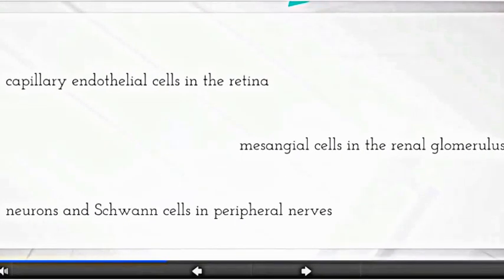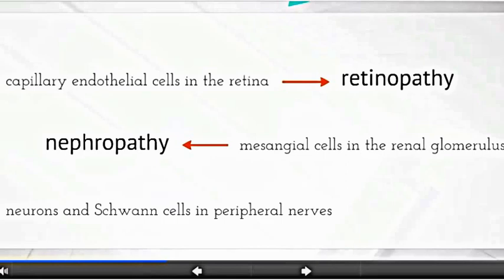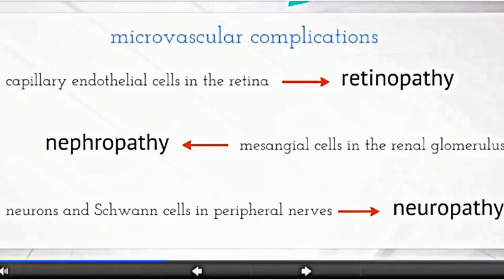We see this specifically in three cell types: the capillary endothelial cells in the retina, the mesangial cells in the renal glomerulus, and the neurons and Schwann cells in peripheral nerves, collectively representing microvascular complications evidenced in diabetes.